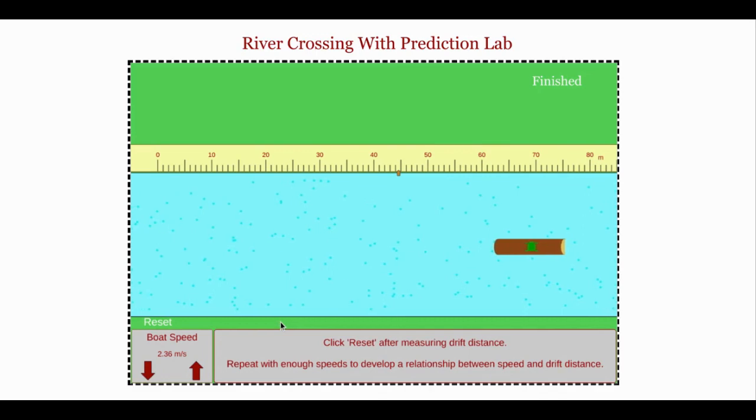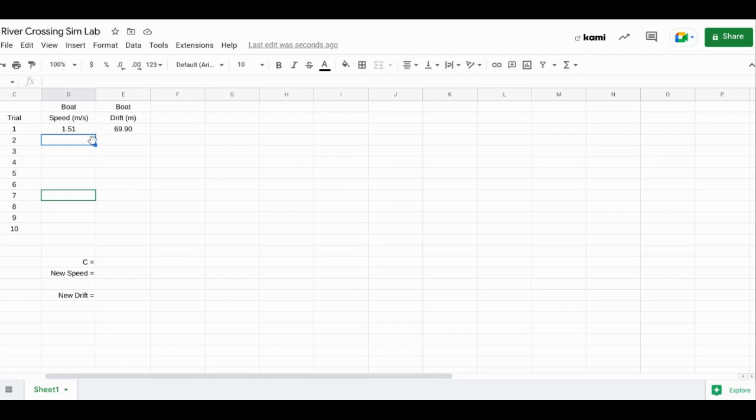This one looks like it landed at 44.8. So I go into the spreadsheet, 2.36, 44.8. I'm just going to repeat that for the rest of the values.